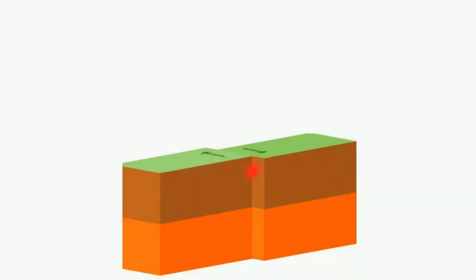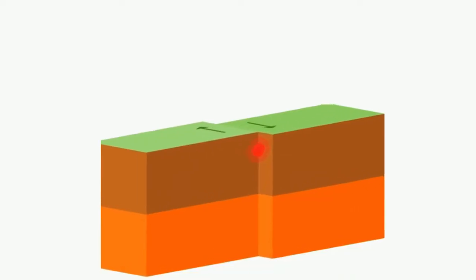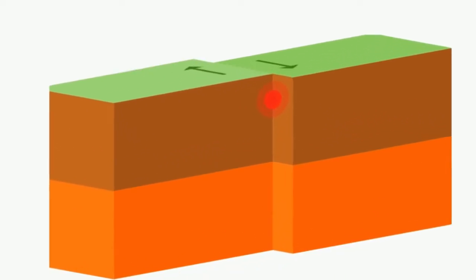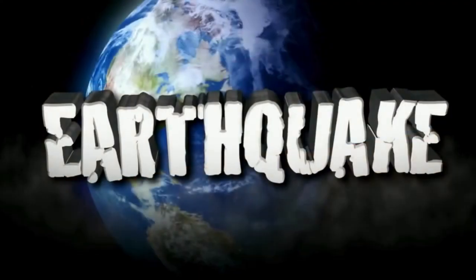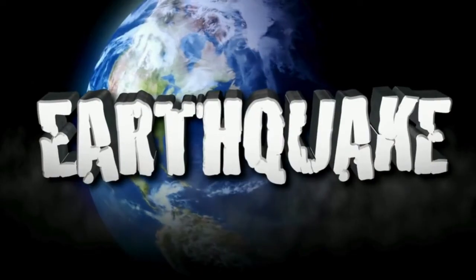And finally, transform boundaries occur where two plates move past each other horizontally. When the plates move next to each other, they do not go along smoothly. Instead, they scrape against each other in a series of sudden slippages of crustal rock, and these can be felt as earthquakes.